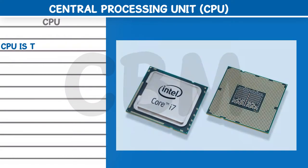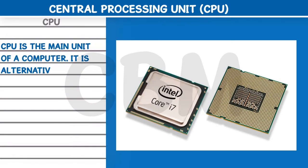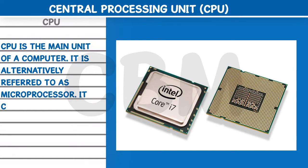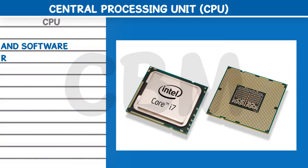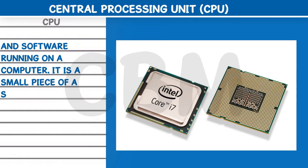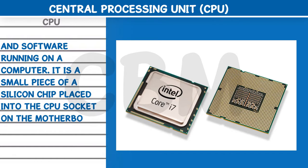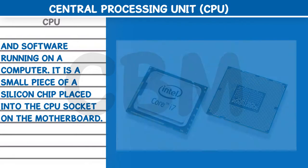CPU: the CPU is the main unit of a computer. It is alternatively referred to as a microprocessor. It controls all the instructions it receives from hardware, internal and external devices, and software running on a computer. It is a small piece of a silicon chip placed into the CPU socket on the motherboard.